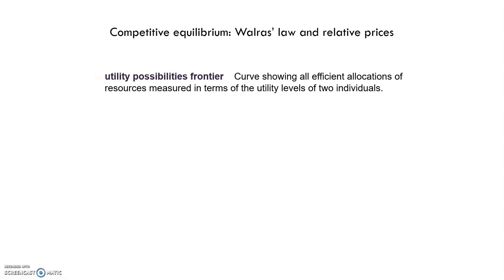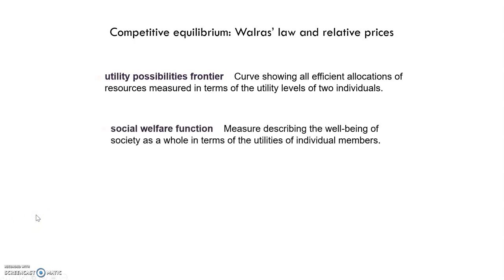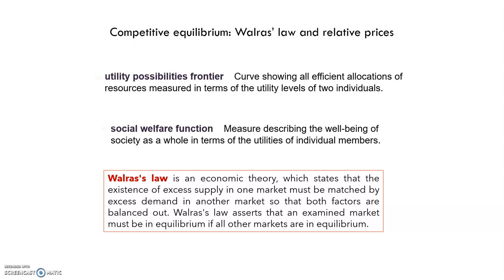The utility possibilities frontier describes all efficient allocations of resources measured in terms of the utility levels of two individuals. In economics, we often use a social welfare function to describe the well-being of society as a whole in terms of the utilities of individual members. Walras's Law is an economic theory which states that the existence of excess supply in one market must be matched by excess demand in another market so that both factors are balanced out. Walras's Law asserts that an excess demand market must be in equilibrium if all other markets are in equilibrium, so at the end all markets will be in equilibrium.